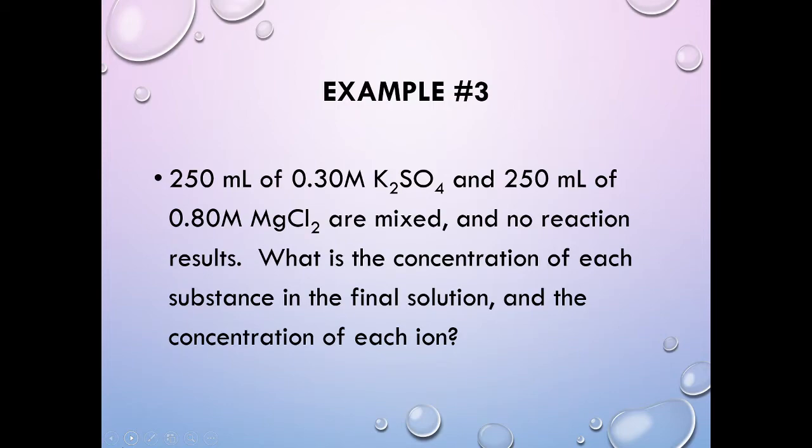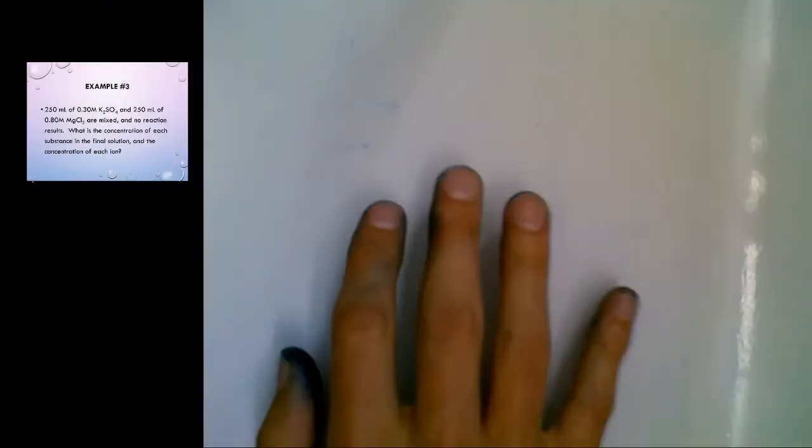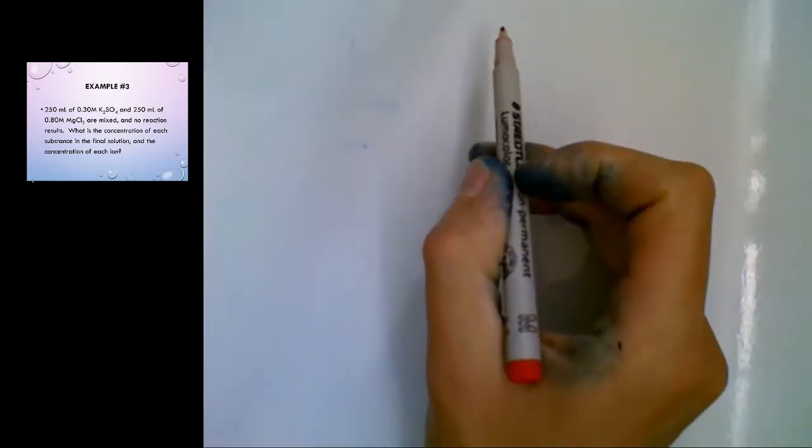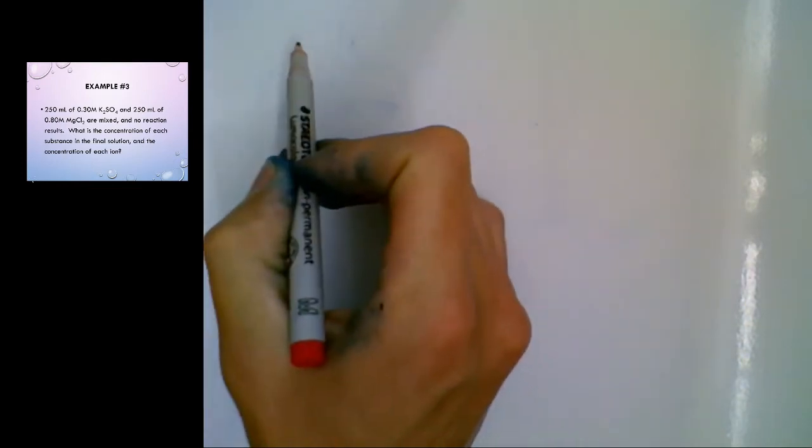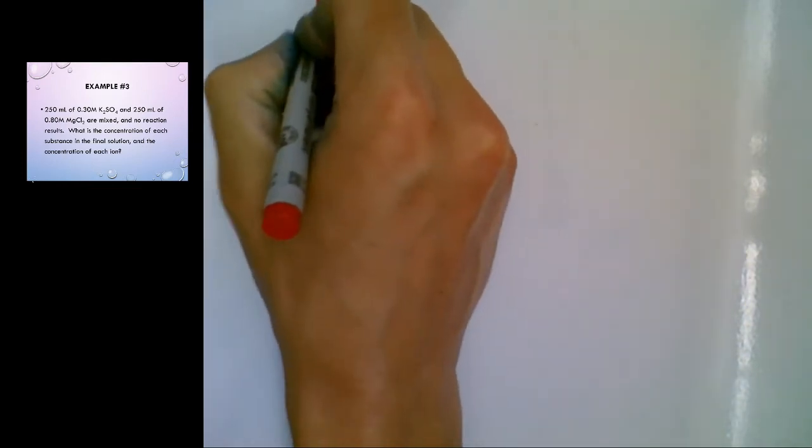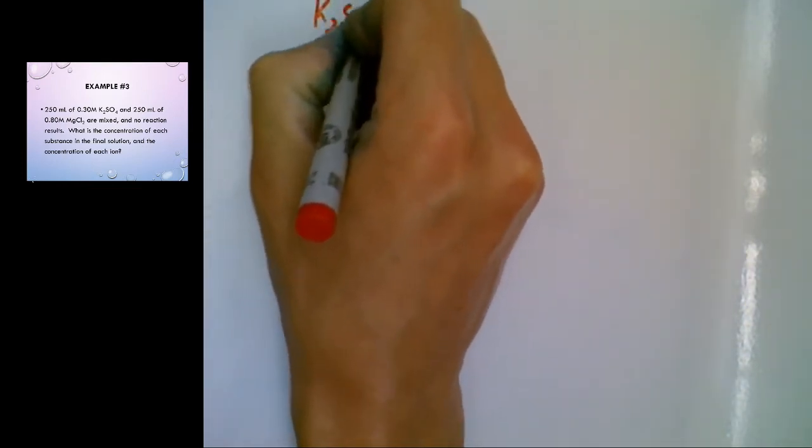So in order to do this calculation, here's what we're going to do. You're going to first of all want a lot of paper because this is going to take a little bit of room. I like to divide my paper in two so that I work with one substance on one side of that paper.